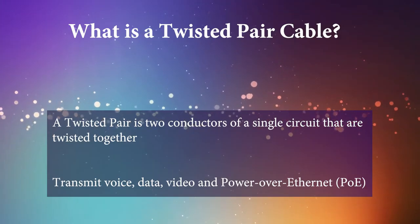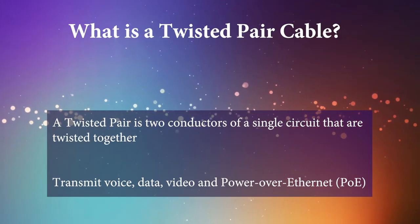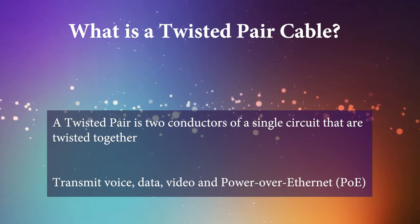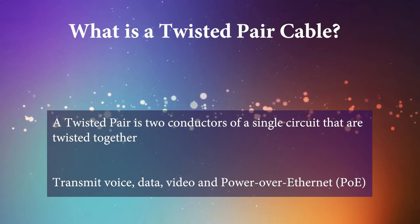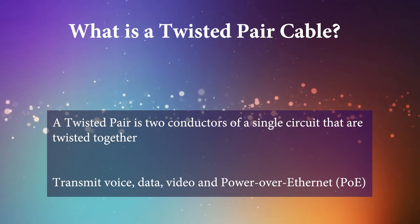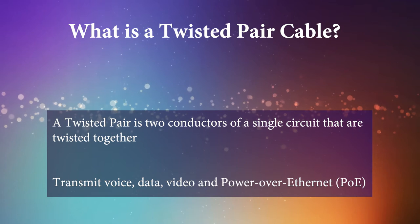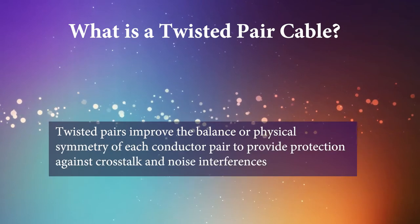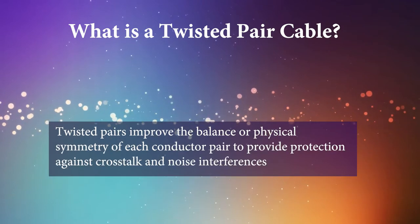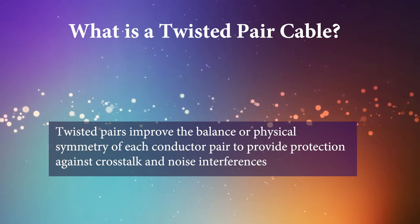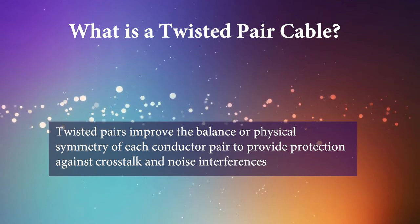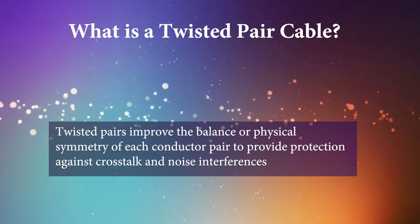A twisted pair cable is a kind of wiring in which two conductors of a single circuit are twisted together to transmit data and are often used for voice, data, video, and power transmission. The pairs are twisted together to provide balance or physical symmetry of each pair, and protection against crosstalk and noise interference due to coupling between adjacent pairs.